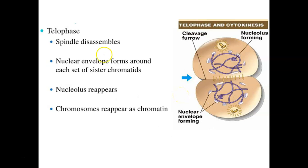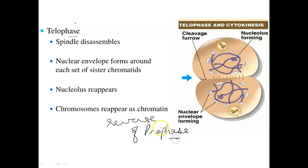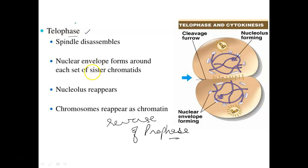The last phase is telophase, which is essentially the reverse of prophase. The nuclear envelope starts forming again, the nucleolus reappears, spindle fibers disappear, and the chromosomes become chromatin-like structures again through decondensation. Then the cell divides, forming two daughter cells. So we have seen interphase, then prophase, then metaphase, then anaphase, and then telophase.